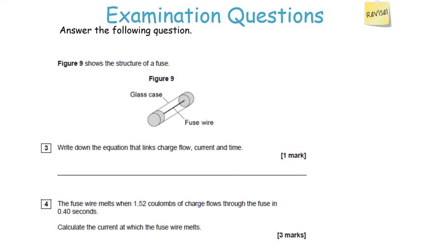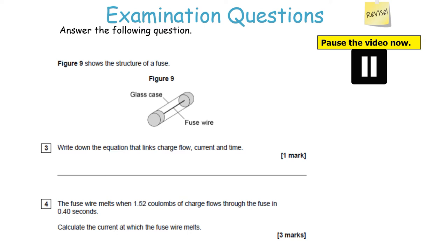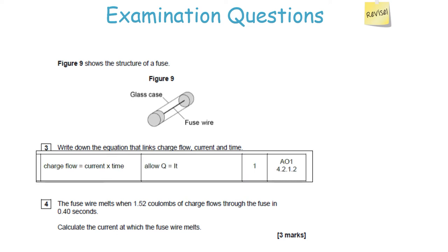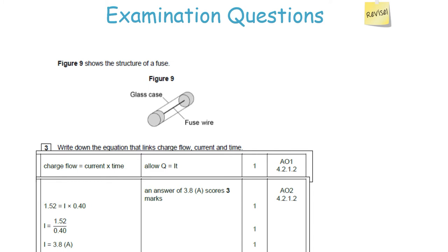Write down the equation linking charge flow, current and time. The fuse wire melts when 1.52 coulombs of charge flows in 0.40 seconds — calculate the current. Charge equals current times time, or Q equals IT. Substituting: 1.52 equals I times 0.40, showing the examiner you know the values for charge and time. Rearranging: I equals 1.52 over 0.40, giving 3.8 amps. Check the answer — 3.8 amps looks sensible.